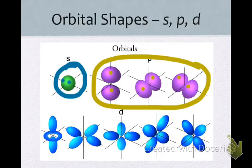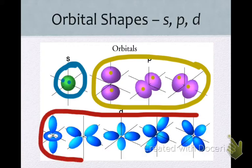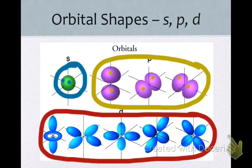If I think about a D sublevel, the entire D sublevel has five orbitals. And since each orbital can hold one, two, three, four, five, six, seven, eight, nine, ten. Each orbital holds two electrons in five orbitals. The D sublevel can hold ten electrons.